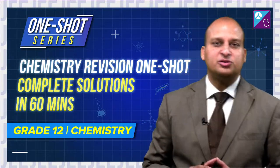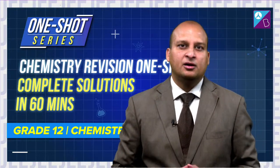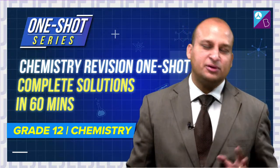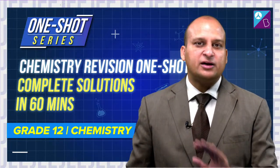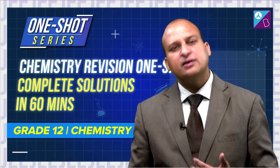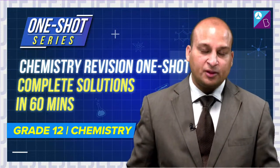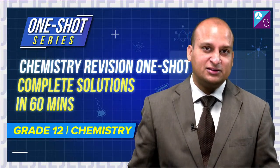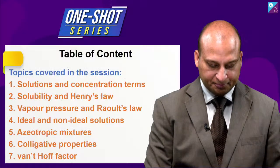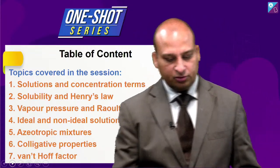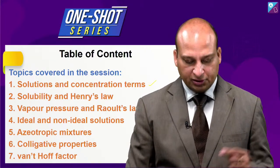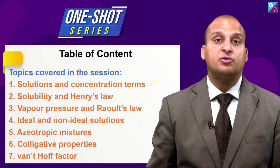Hello dear students, I welcome you all to this one-shot series. The idea of the series is to complete the whole chapter within 60 minutes. We will also pick up a few numericals and we have only 60 minutes, so time is running out, let us be quick and start. We are going to talk about solutions and concentration terms, solubility and Henry's law, vapour pressure and Raoult's law, ideal and non-ideal solutions, azeotropic mixture and colligative properties followed by Van't Hoff's factor.